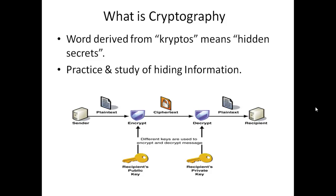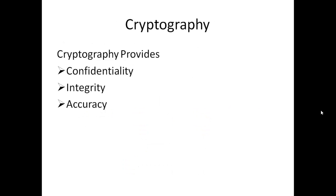Cryptography is a practice and study of hiding information. It is the science of converting plain, intelligible data into unintelligible data, and again re-transforming that message into its original form. Cryptography provides confidentiality, integrity, and accuracy. This can be done with a process of encryption and decryption.